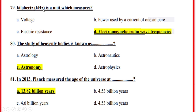Kilohertz is a unit which measures — correct option D — electromagnetic radio wave frequencies. The study of heavenly bodies is known as — correct option C — astronomy. In 2013, Planck estimated the age of the universe as — correct option A — 13.82 billion years.